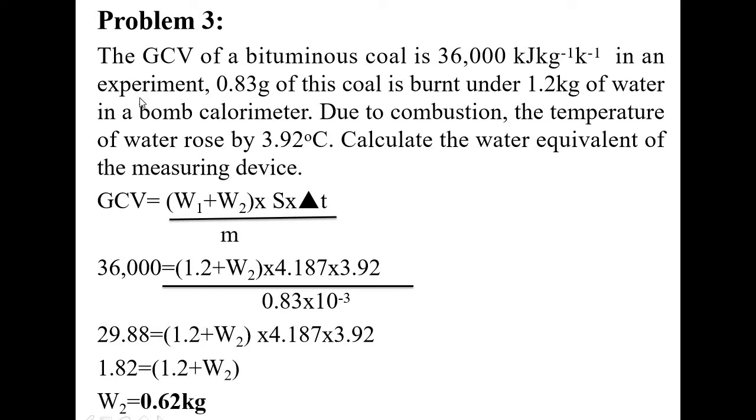Problem number 3. The GCV of a bituminous coal is 36,000 kilojoules per kg given. In an experiment 0.83 gram of this coal is burnt under 1.2 kg of water. Due to combustion the temperature of water rose by 3.92 degrees Celsius. Calculate the water equivalent of the measuring device. Here they have asked us to find out water equivalent of the calorimeter. Again write the GCV formula and substitute. GCV value is given here, 36,000. This GCV value you substitute here. W1 is 1.2 kg of water taken in the bomb calorimeter, so W1 is 1.2.